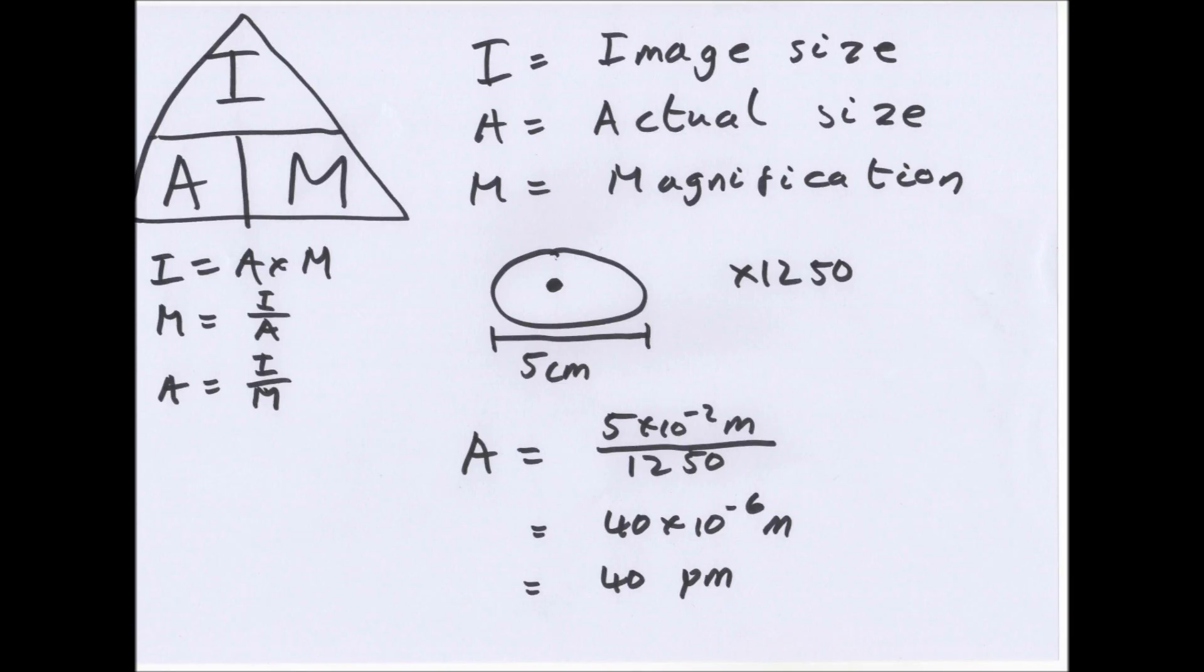This cell is 5 centimeters. That is the image size. I said the magnification is times 1250. So how do you work out the actual size of that cell? Well you want to use actual size equals image size over magnification. The image size is 5 centimeters. That is 5 times 10 to the minus 2 meters. Always convert it into meters. Divided by the magnification, 1250. That equals 40 times 10 to the minus 6 meters, or 40 micrometers. Always best converted back into micrometers or nanometers, whichever is more appropriate.